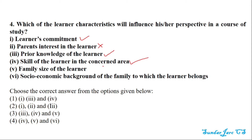Family size of the learner — in the study, family size does not influence the learner, so that is wrong. Socio-economic background of the family to which the learner belongs — that is also wrong. So the correct answers are 1, 3, and 4.